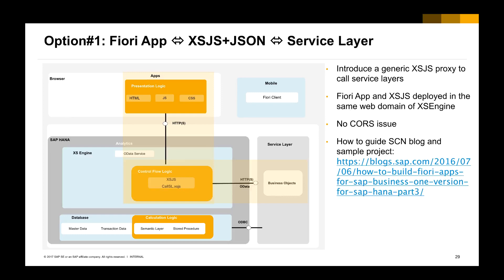For Option 1, we introduce a generic server-side JavaScript proxy to call the Service Layer — to log in, to get the sales order, to create a sales order, to patch a sales order, and so on. As you can see in the architecture, the Fiori app and the server-side JavaScript are both hosted in HANA Exchange. When the client browser runs the Fiori app, it makes a call to the server-side JavaScript first to log in and get the sales order. The server-side JavaScript then makes an outgoing HTTP call to the Service Layer to log in, post, patch, or update the sales order.